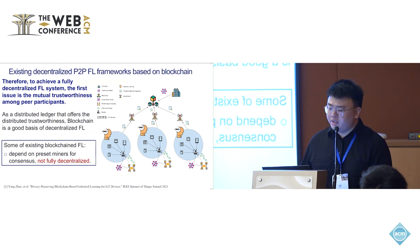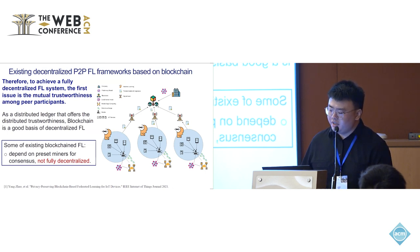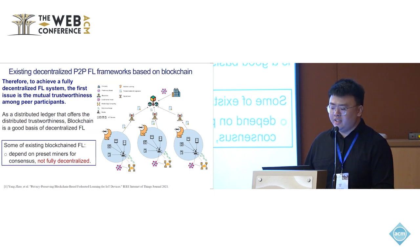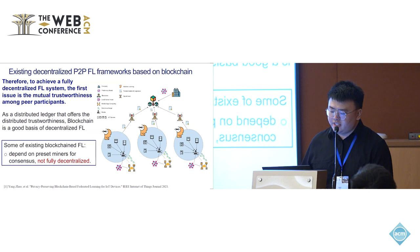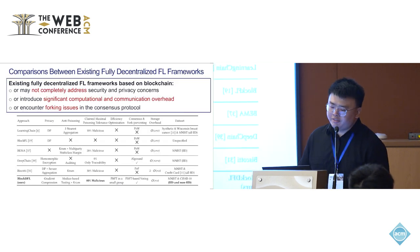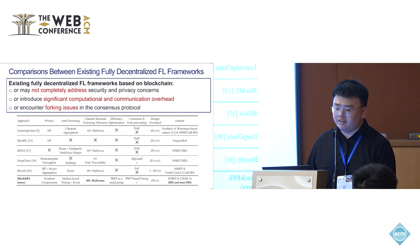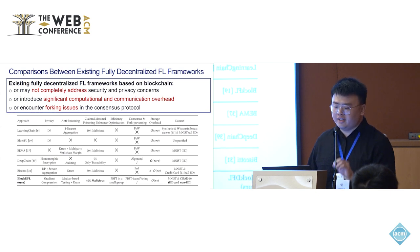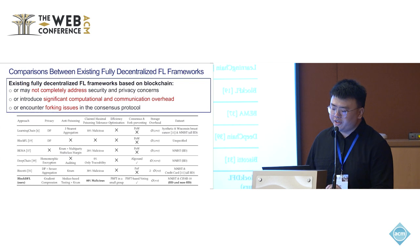So the main problem we need to solve is trustworthiness. To achieve a fully decentralized FL system, we need to establish mutual trustworthiness among peer participants. As a distributed ledger that offers distributed trustworthiness, blockchain is a good basis for decentralized FL. But some existing blockchain FL frameworks depend on special miners for consensus, so they are not fully decentralized because participants are not equal in authority. From our investigation, existing fully decentralized FL frameworks based on blockchain may not completely address security and privacy concerns, or introduce significant computational and communication overhead, or encounter forking issues because they may rely on mining protocols.